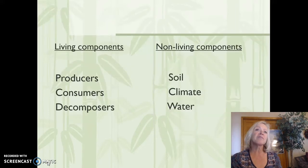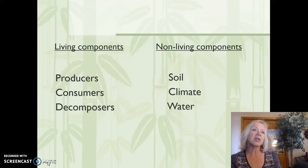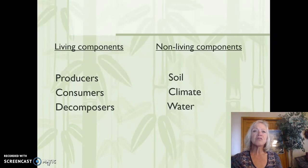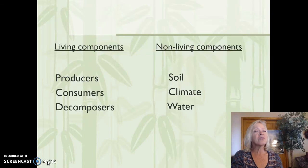The living components in the biotic pyramid are the producers, the consumers, and the decomposers. The nonliving components — reviewed from biology — are soil, climate, and water. All six of these things are affected in the ecosystem.